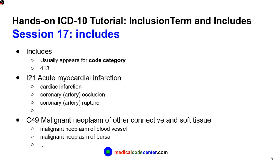Next, let's talk about Includes. Includes usually appear for code categories. The code category is the three-digit code. For the 2019 version, we have around 400 Includes nodes. I will give you two examples.